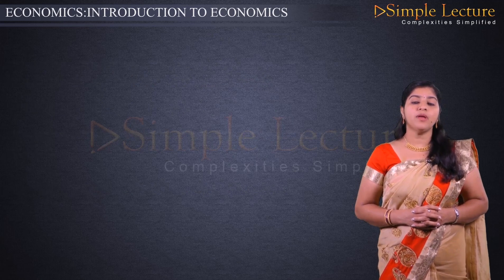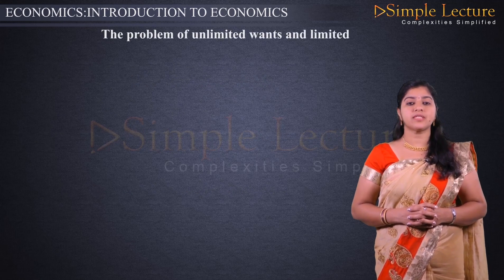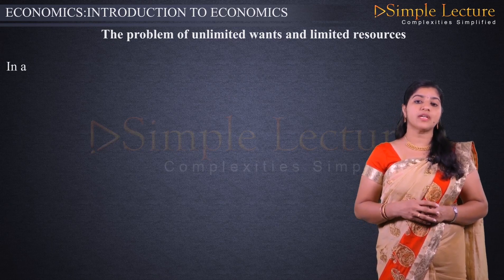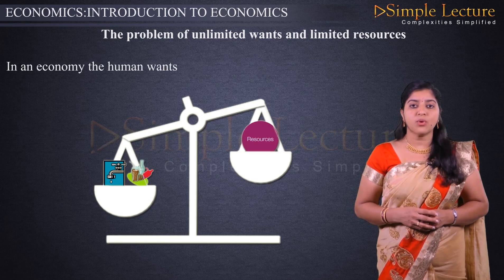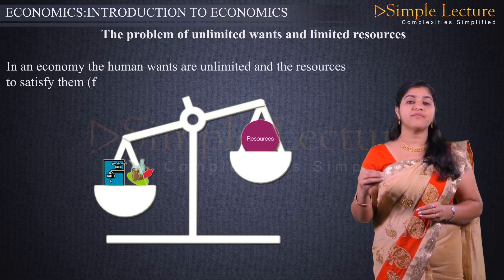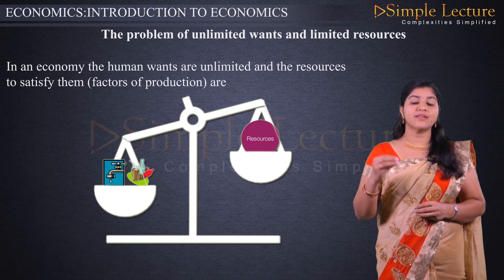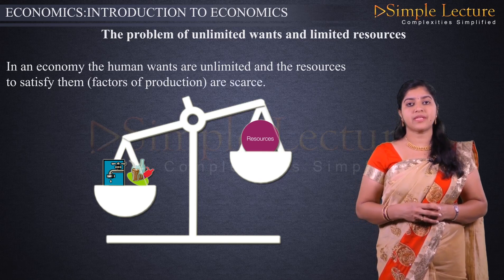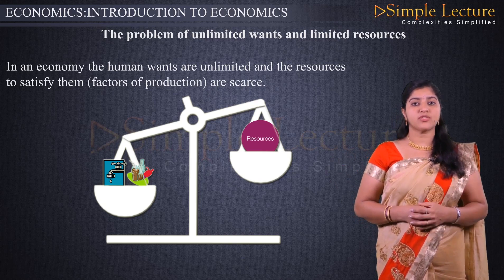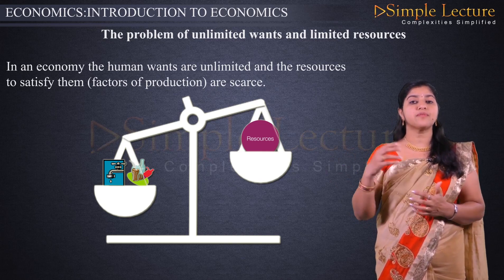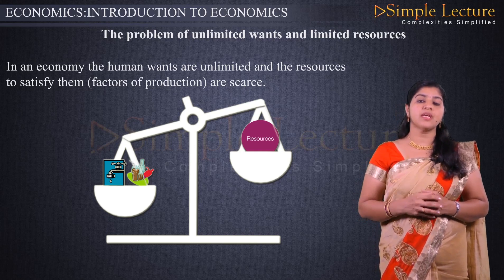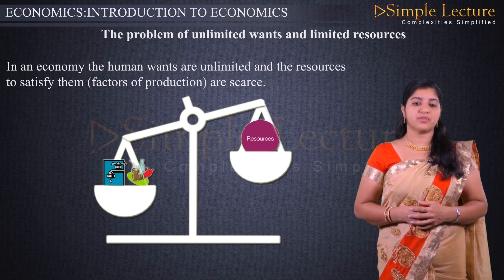Next is the problem of unlimited wants and limited resources. In an economy, human wants are unlimited, and the resources to satisfy them — land, labor, capital, and organization — are the main factors of production. There are also natural resources, human resources, and man-made resources.